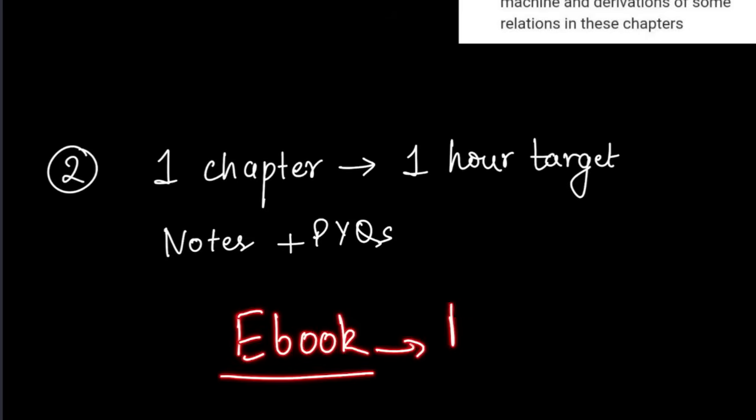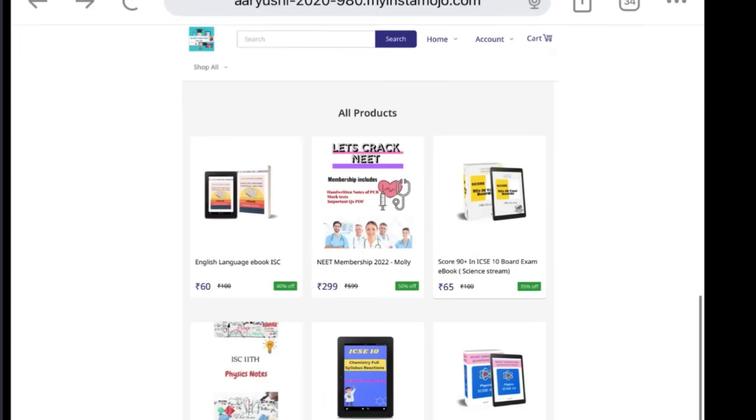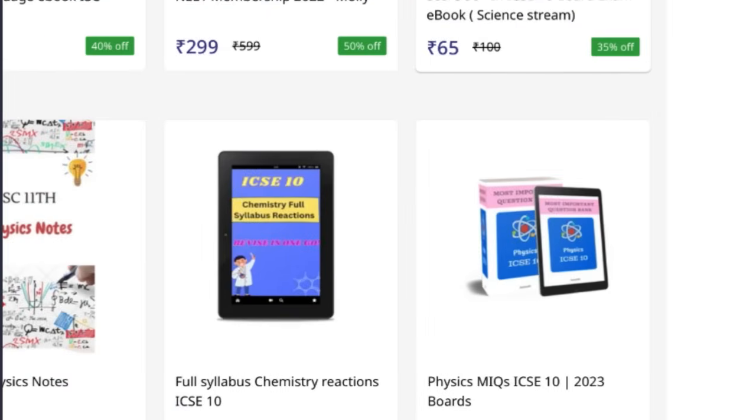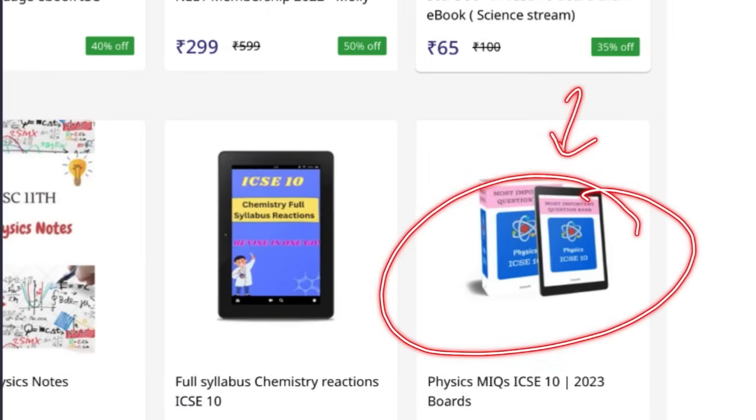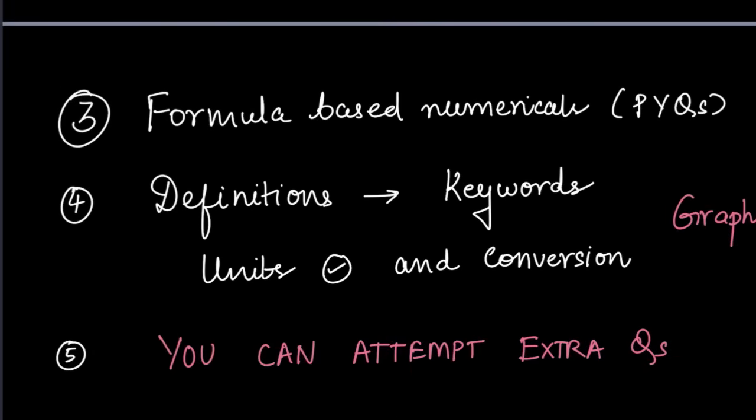Plus you can also refer to my ebook, which is Physics MIQs. This is the website you have to visit, link is in the description box. Ebooks for class 10th are available here, be it Chemistry full reactions or Physics MIQs. This is the ebook I am telling you about. This has all the important questions covered. You can buy it from the link in the description box.